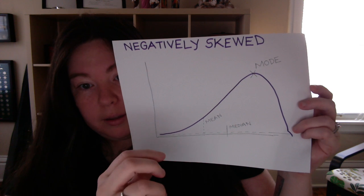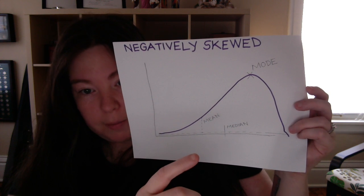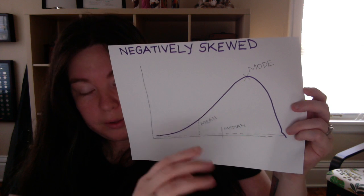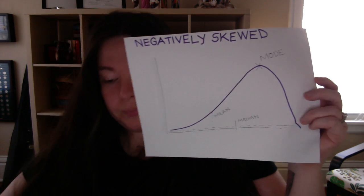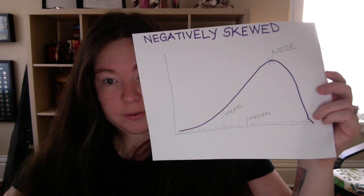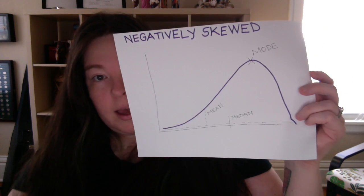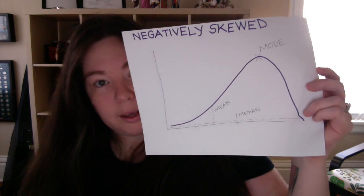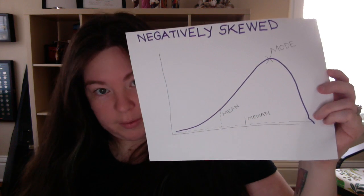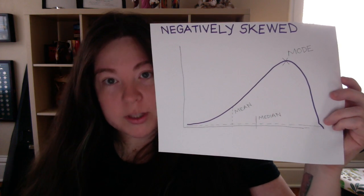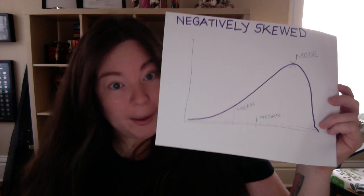So your mean gets pulled the furthest out to the left, your median gets pulled out a bit to the left, and your mode generally stays up at the top, which gets moved to the right. That is a negative skew — the tail goes to the left, or in a graph of numbers, the left is always negative. You can also think of it as a bunch of data points having low scores and pulling the entire distribution down.